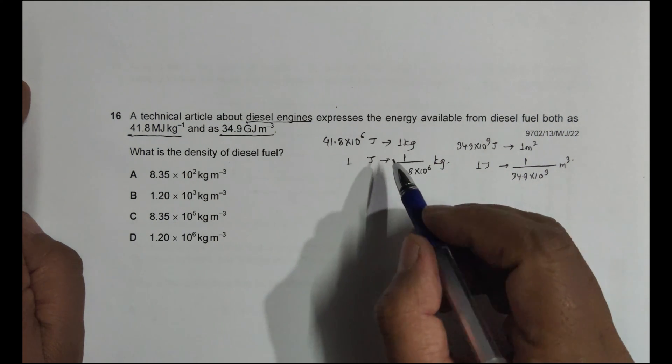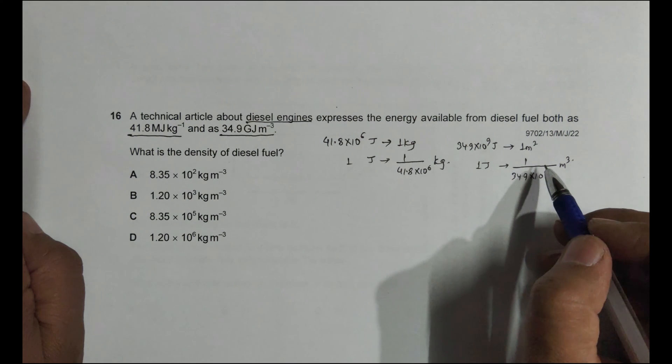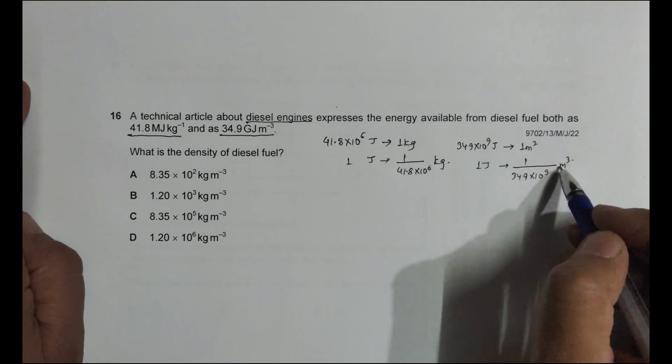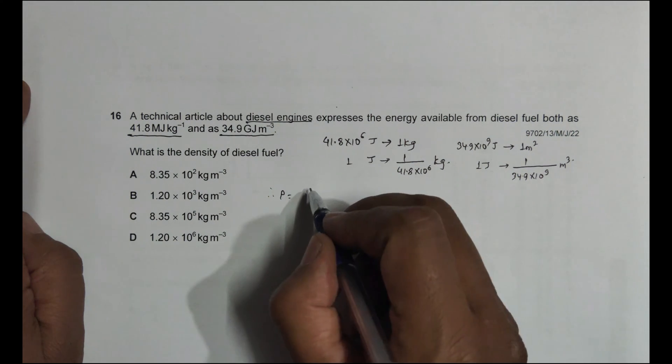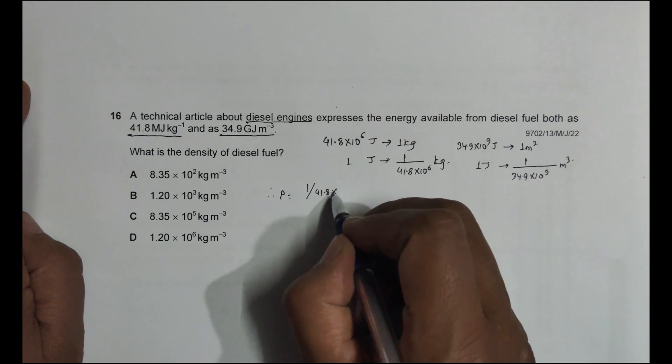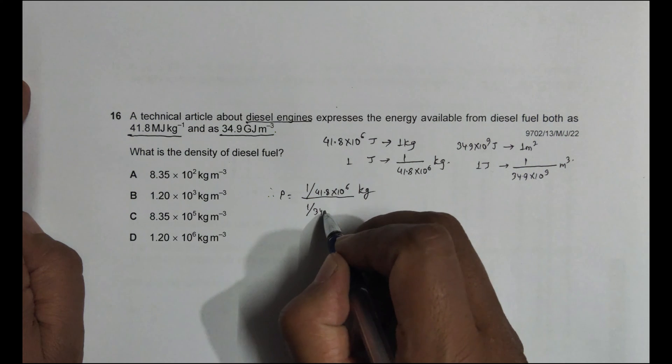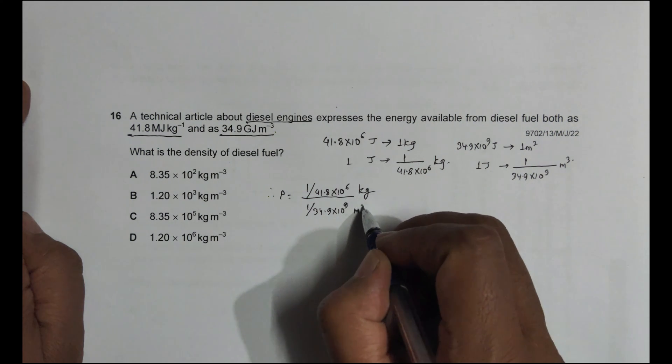So that means the mass required for 1 joule is this much. The volume required for 1 joule is this much. Therefore, the density is equal to 1 by 41.8 into 10 to the power 6 divided by 1 by 34.9 into 10 to the power 9 meter cube.